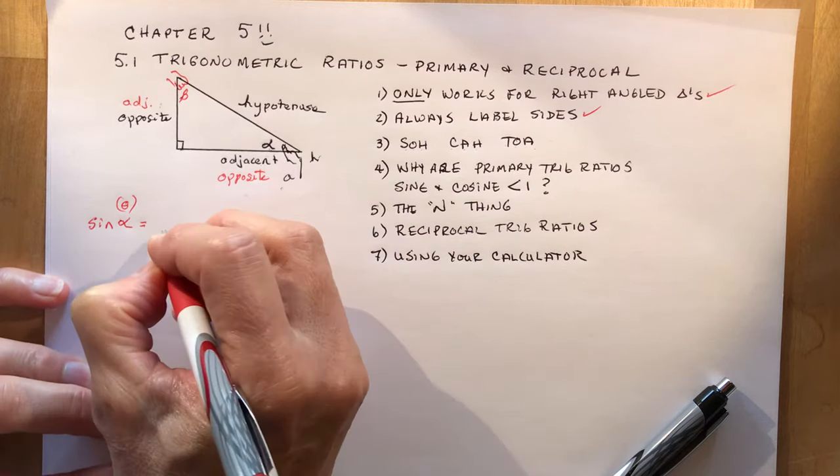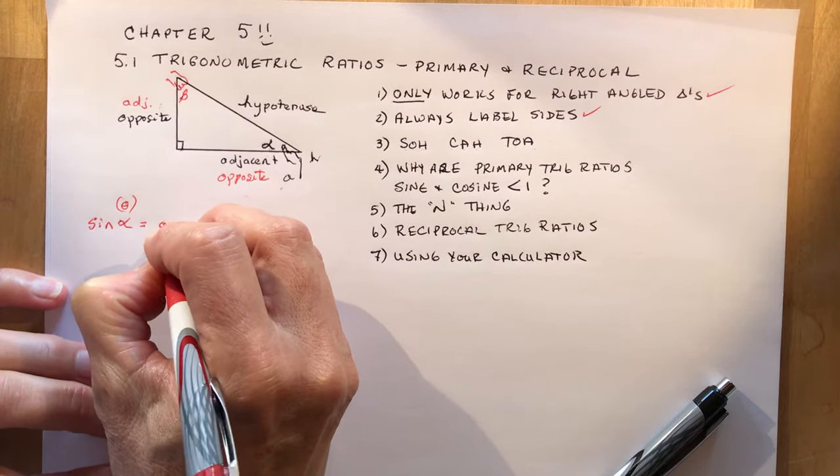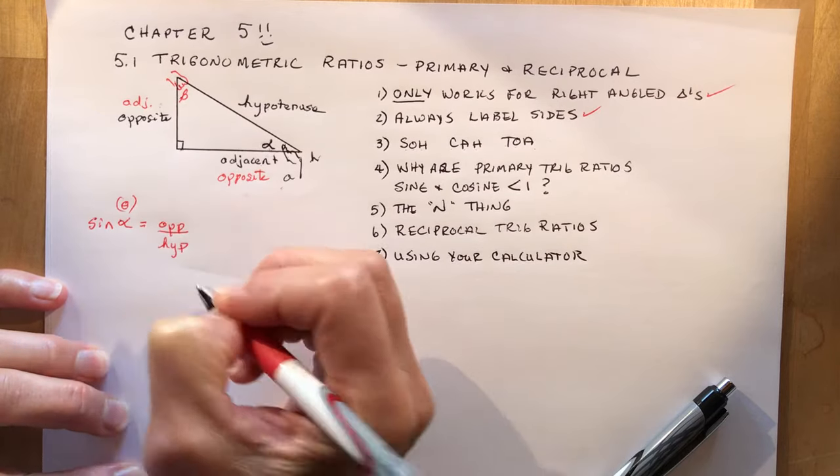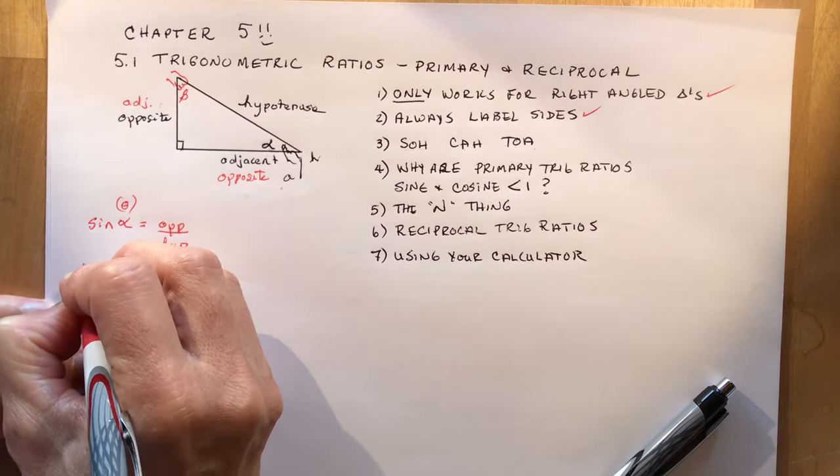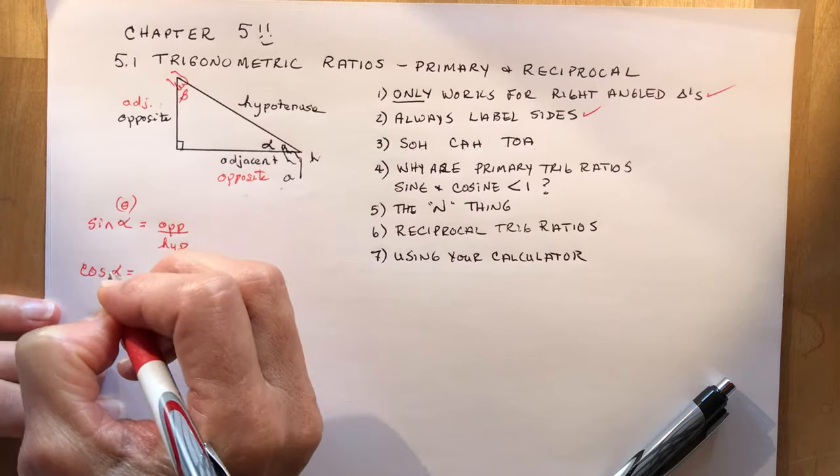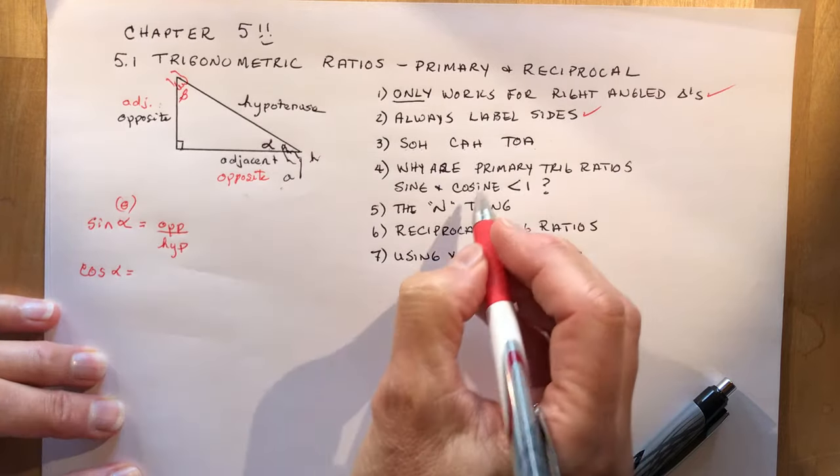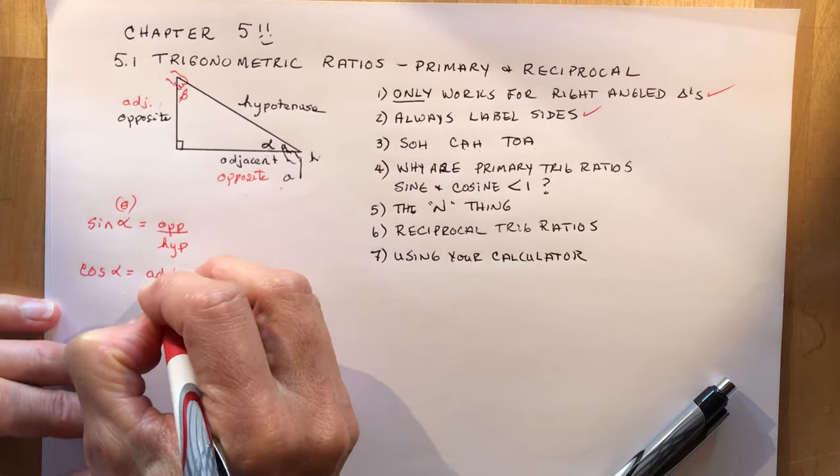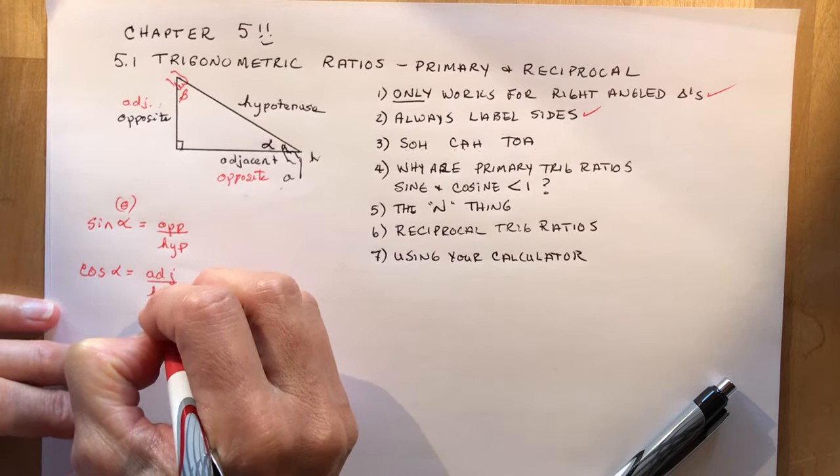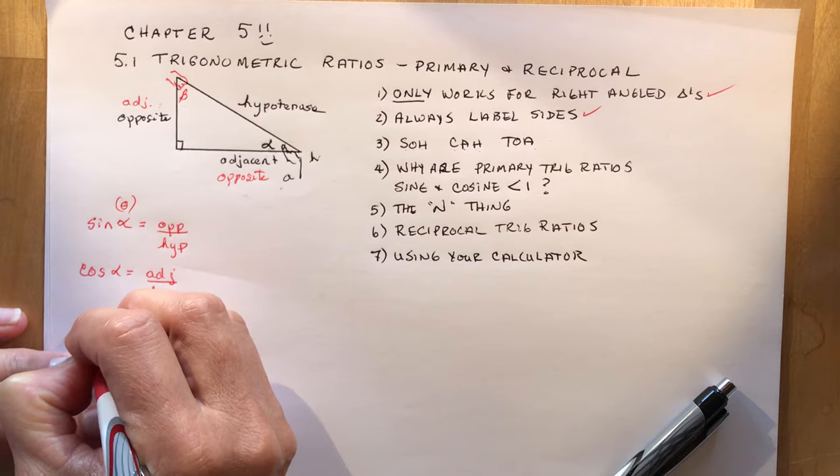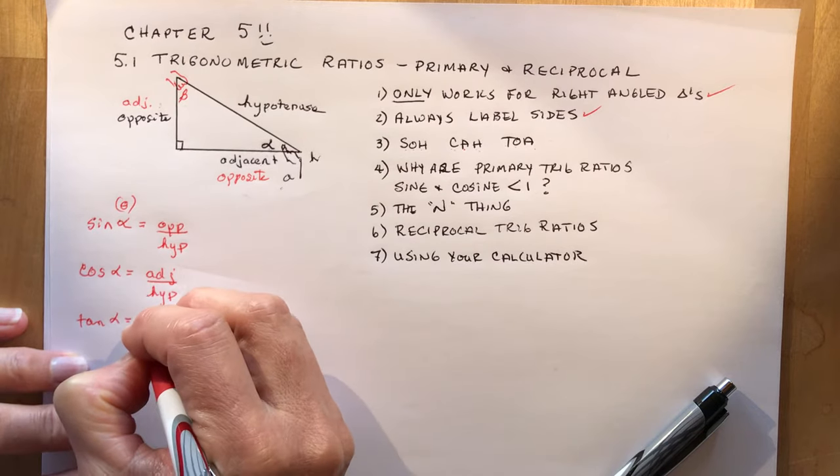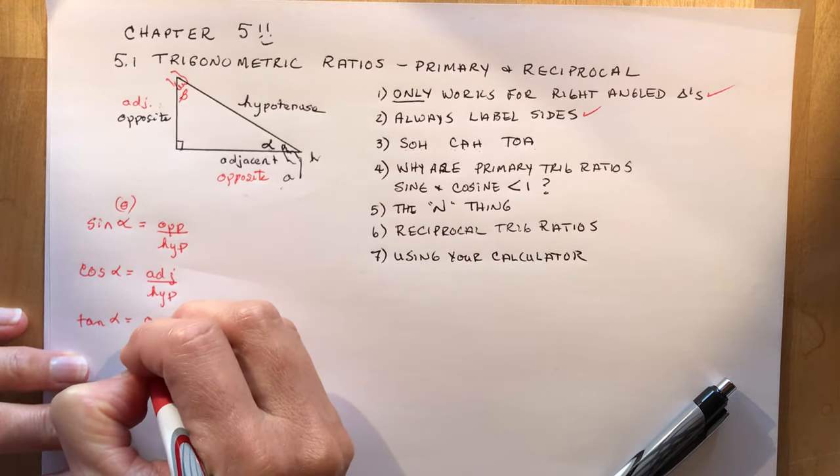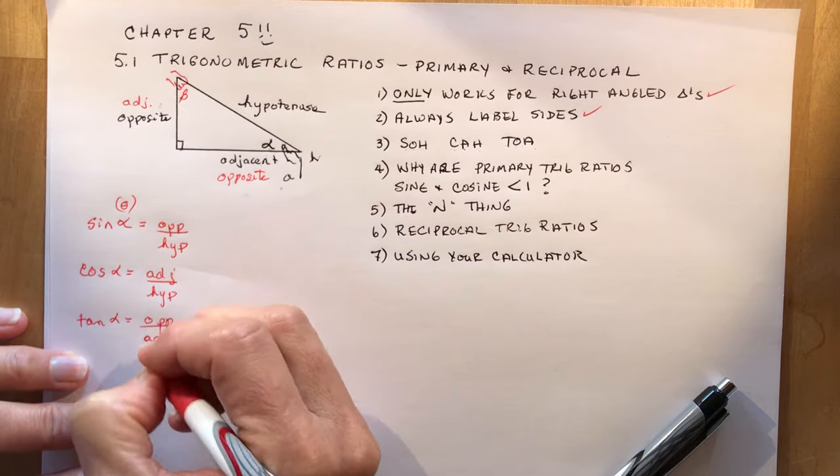Sine of alpha or theta is opposite over hypotenuse. The cosine of theta is the CAH part, right? So we're using CAH, adjacent over hypotenuse. And tangent of alpha would be opposite over adjacent, OA.